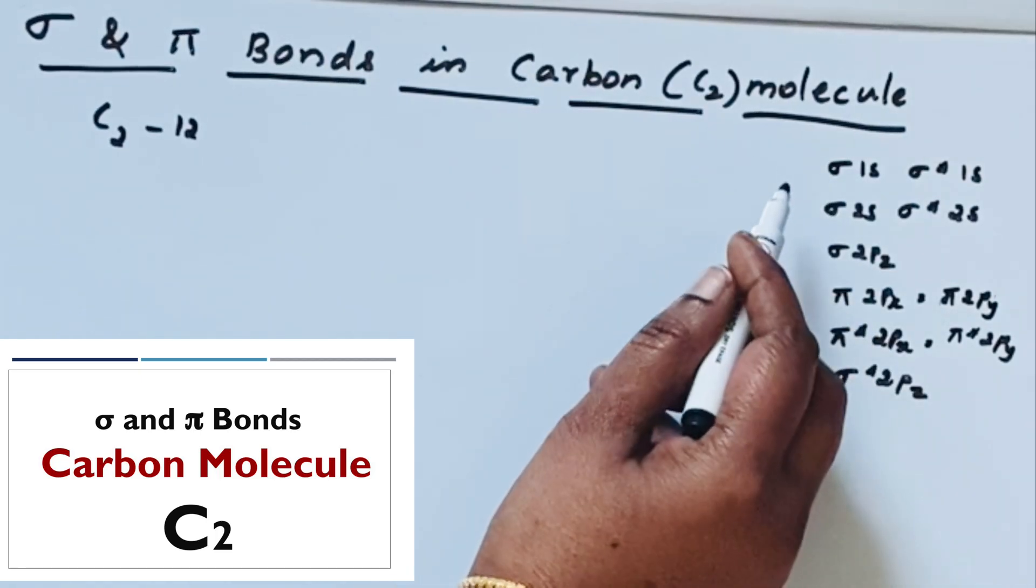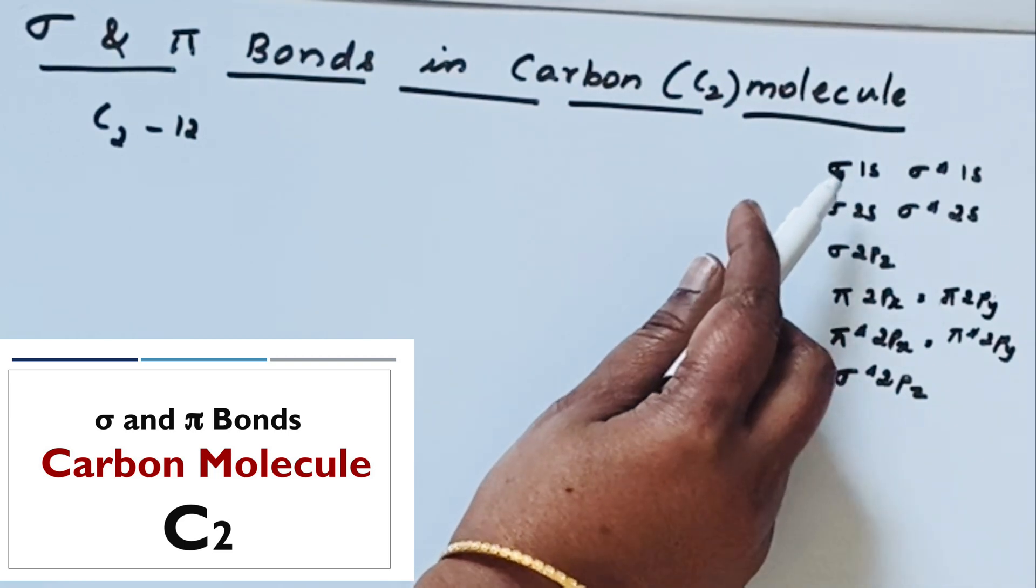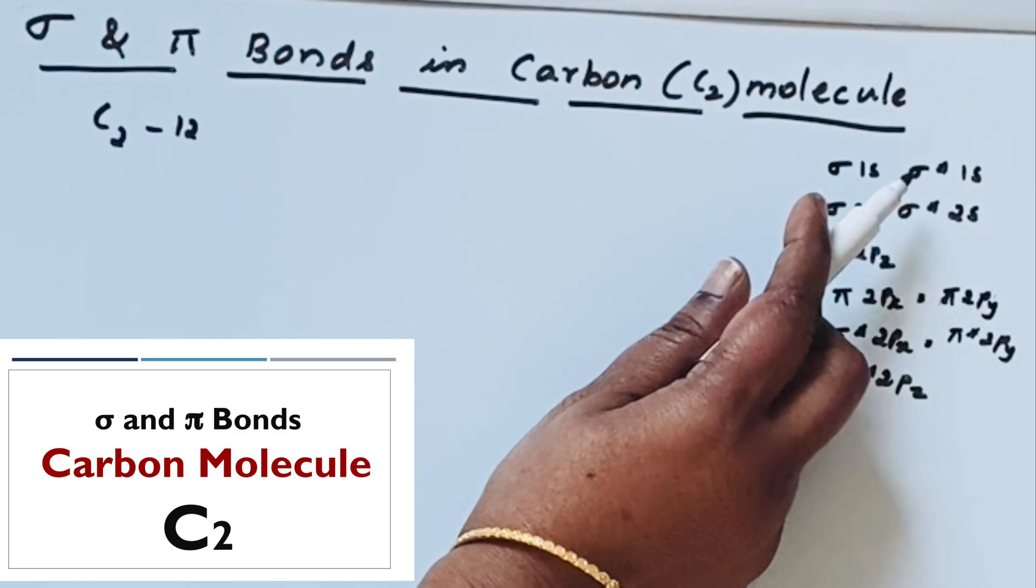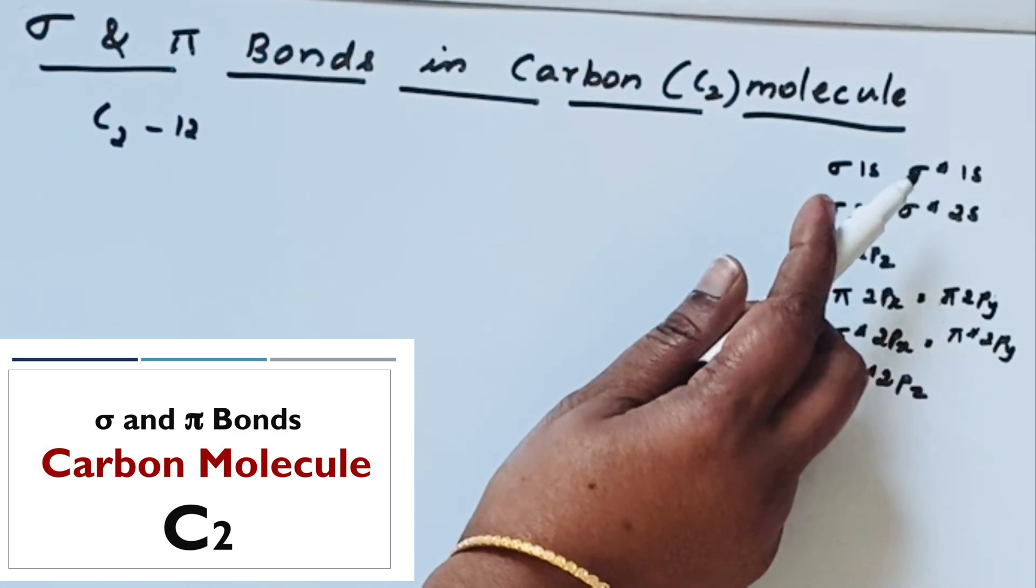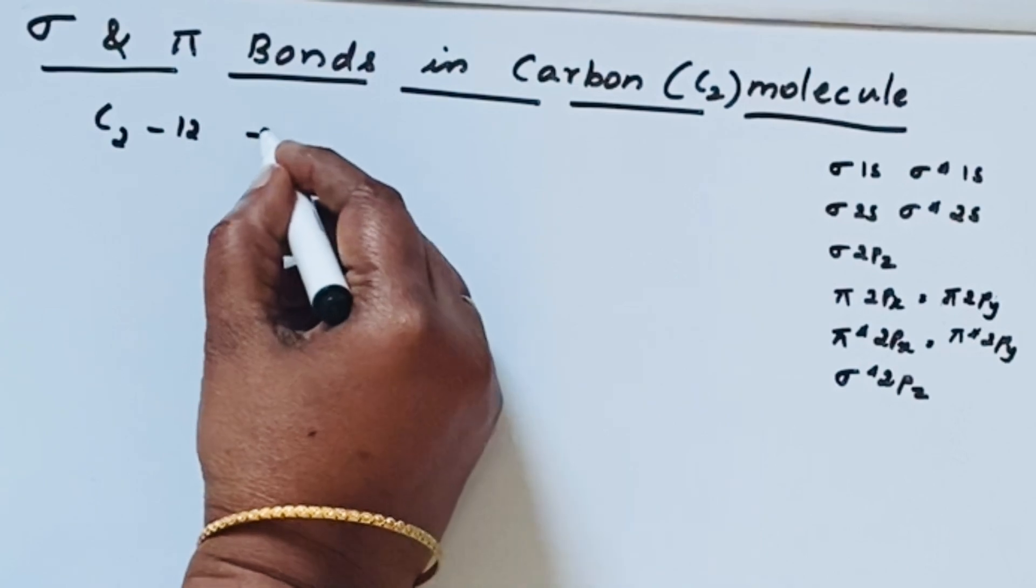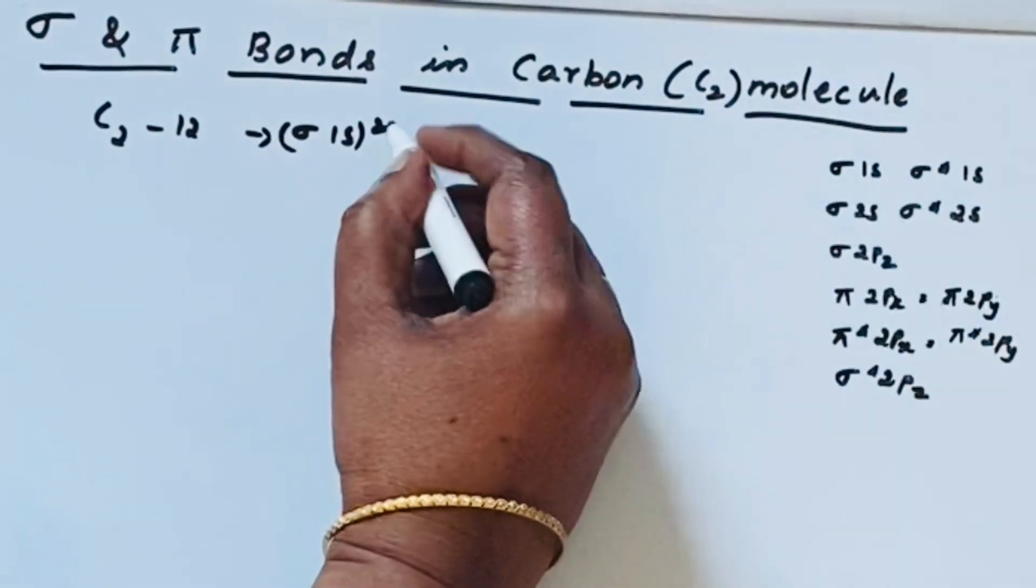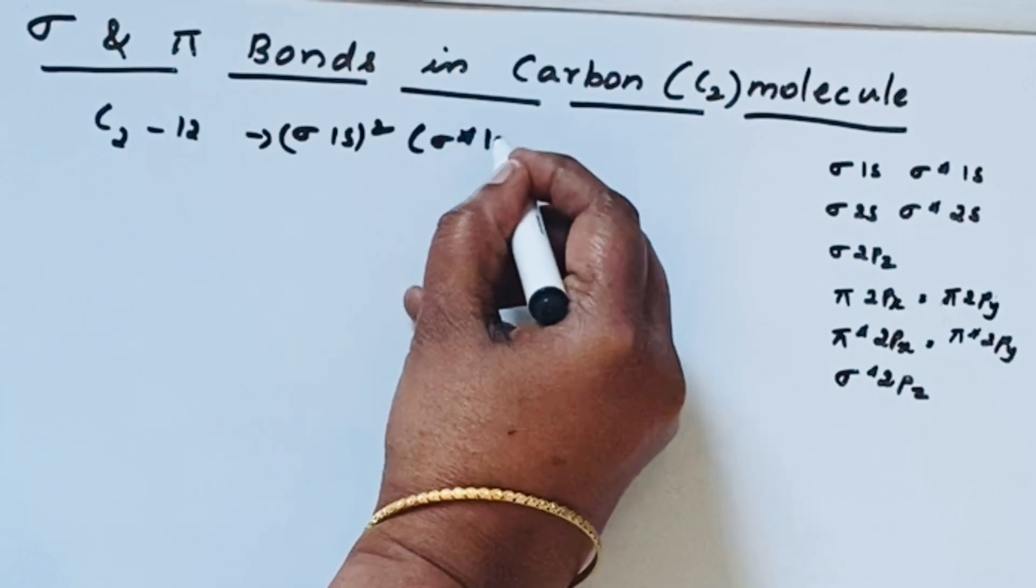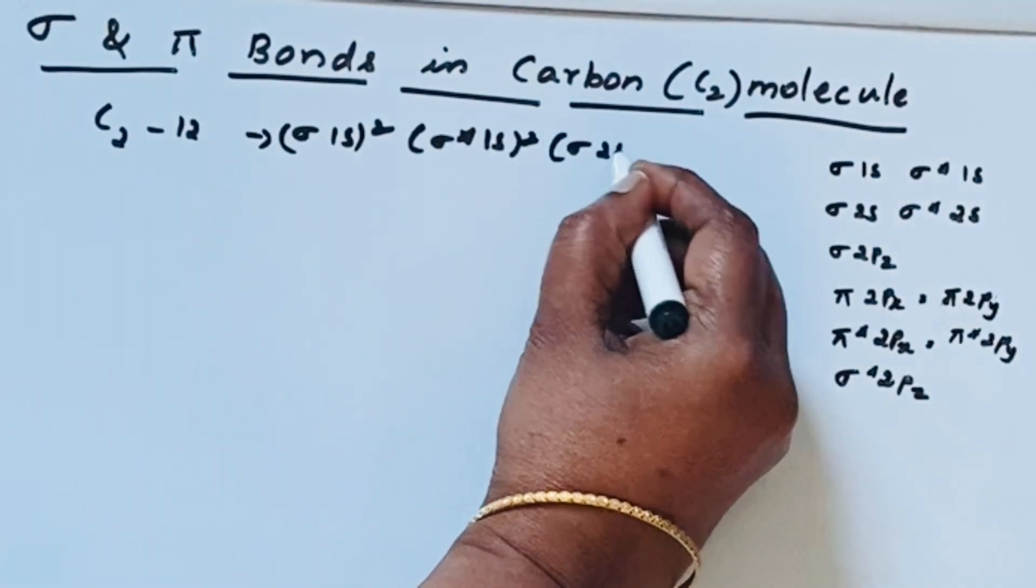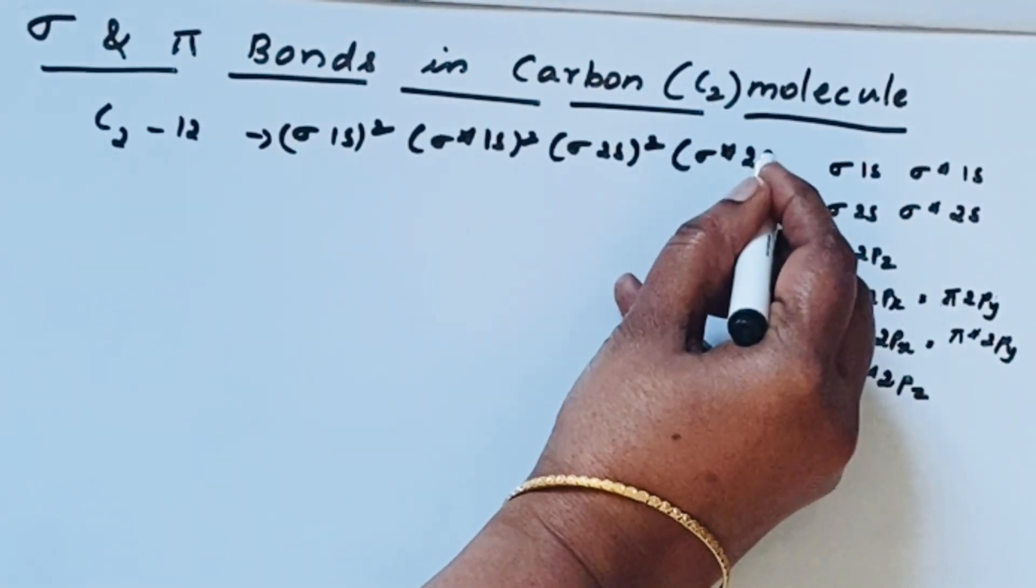This is the increasing order of molecular orbitals. It means after filling sigma 1s molecular orbital, then only the electron can enter into sigma star antibonding molecular orbitals. So for carbon 12 we can write sigma 1s2, then sigma star 1s2, then sigma 2s2, then sigma star 2s2.